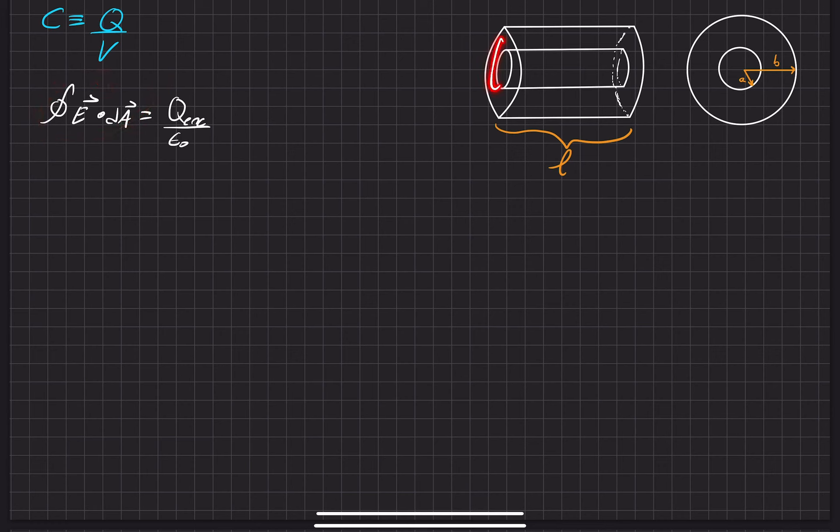Since the normal vector of that Gaussian surface is also normal to the electric field that jets off from that cylinder, we'll turn this dot product into a multiplication. So we have the magnitude of the electric field times the surface, that Gaussian surface, which is 2πRL.